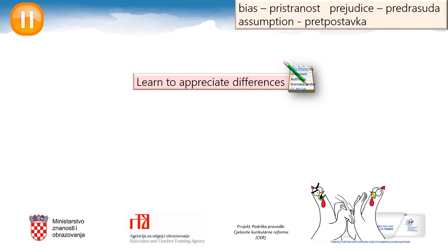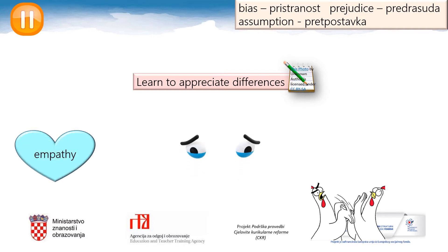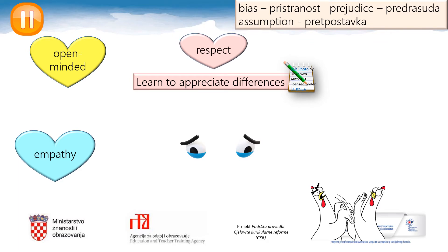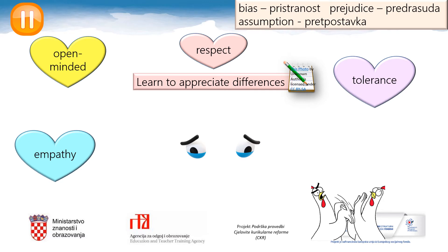What characteristics are necessary to appreciate and embrace the differences? Empathy. We need to be open-minded. We need to have respect for each other. It is necessary to be tolerant. And one crucial element, the top priority, is that we need to be critical thinkers. More on that coming up in a second.